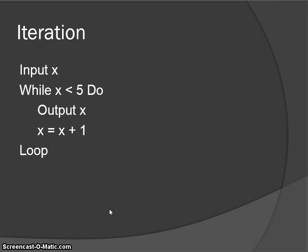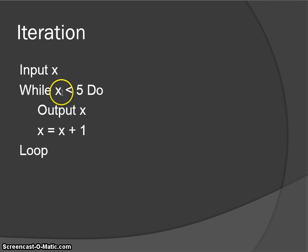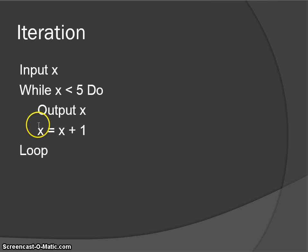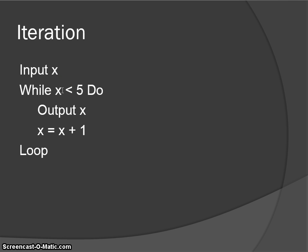Here's another example of iteration. This time, instead of a loop-until, we've got a while. Input x — while x is less than 5, do the following. If I entered 2: 2 is less than 5, so output 2; x now equals 2 plus 1, which is 3. 3 is less than 5, so output 3; x equals 3 plus 1, which is 4. 4 is less than 5, so output 4; x equals 4 plus 1, so x is now 5. 5 is no longer less than 5, so we jump to the next piece of code in sequence — which in this case there isn't any.